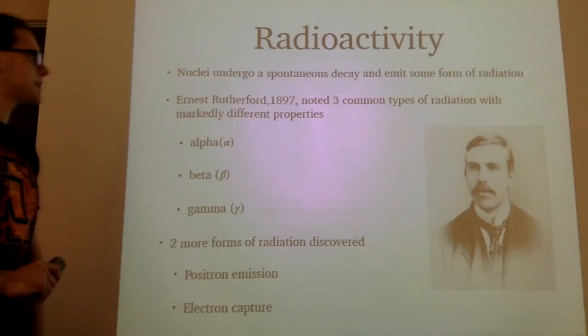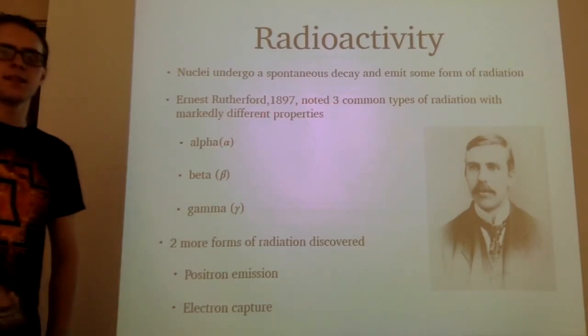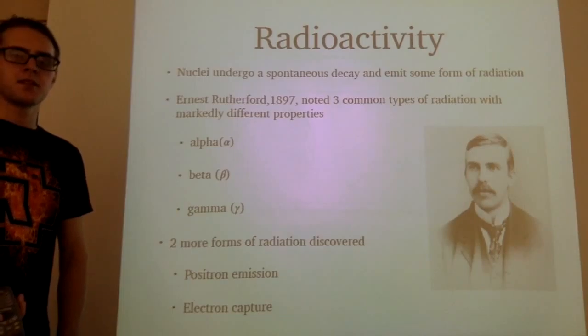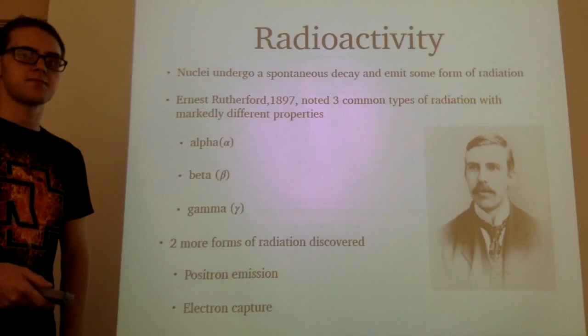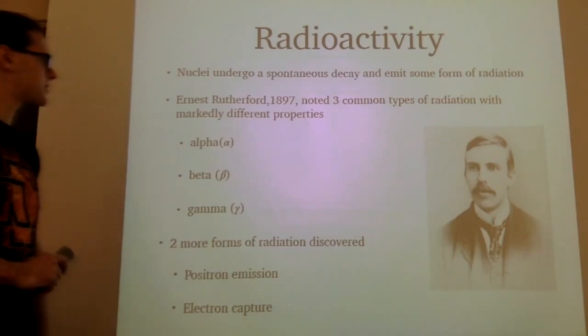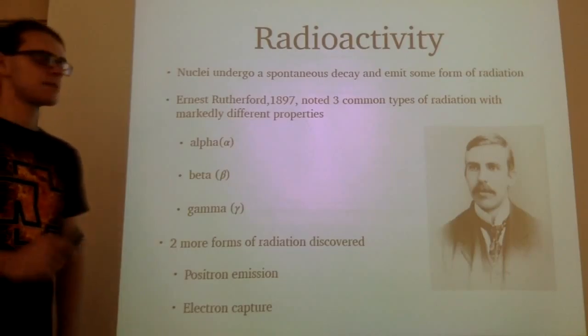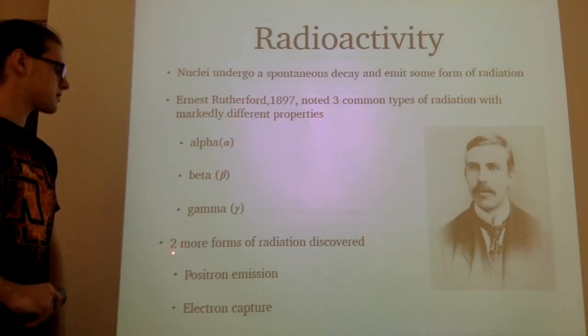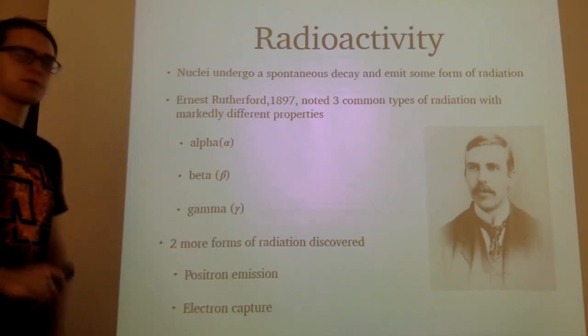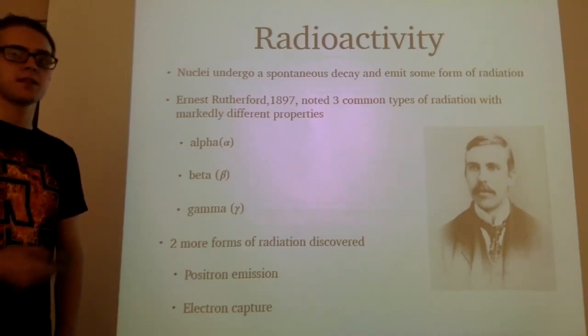In 1897, Ernst Rutherford was studying radioactivity, doing several different experiments, most well known for the Gold Foil Experiment. In this conclusion, there's three very distinct types of radiation. And since this day, we've been able to discover two new forms. So that gives us five overall, with alpha, beta, gamma, electron, and electron capture.